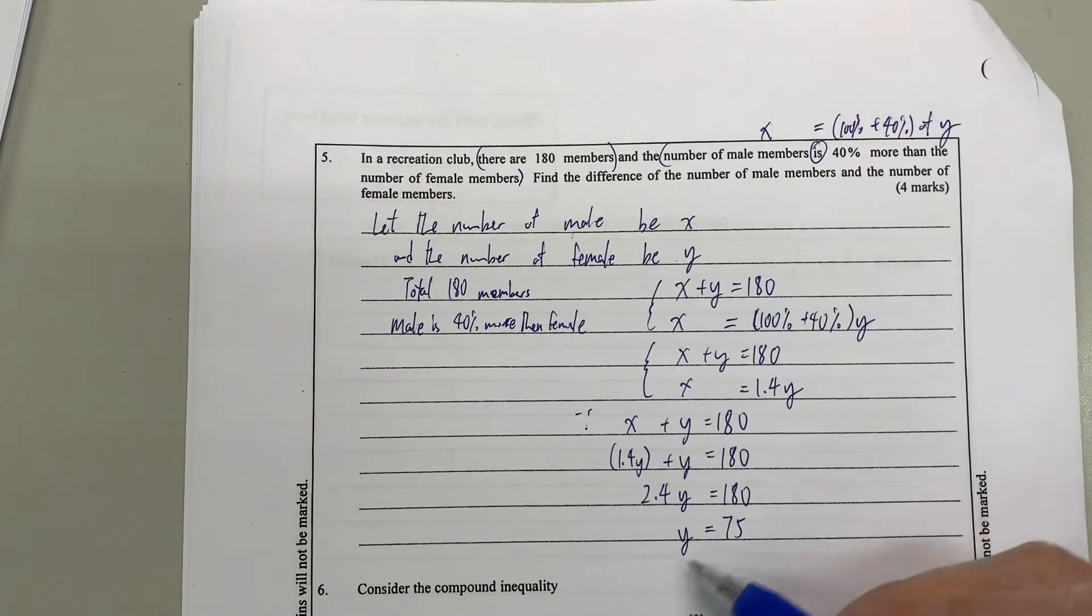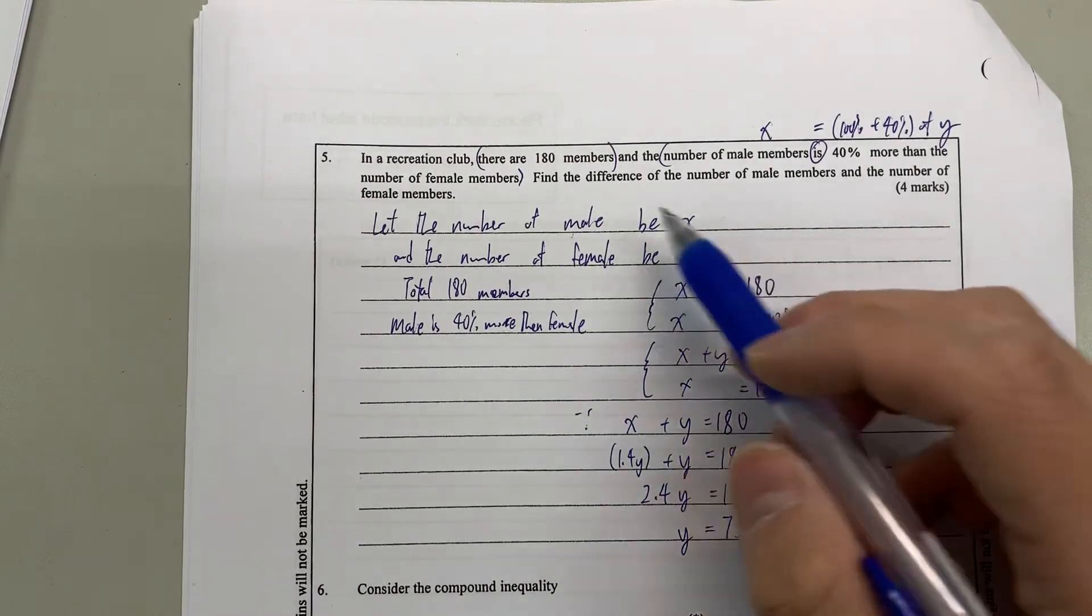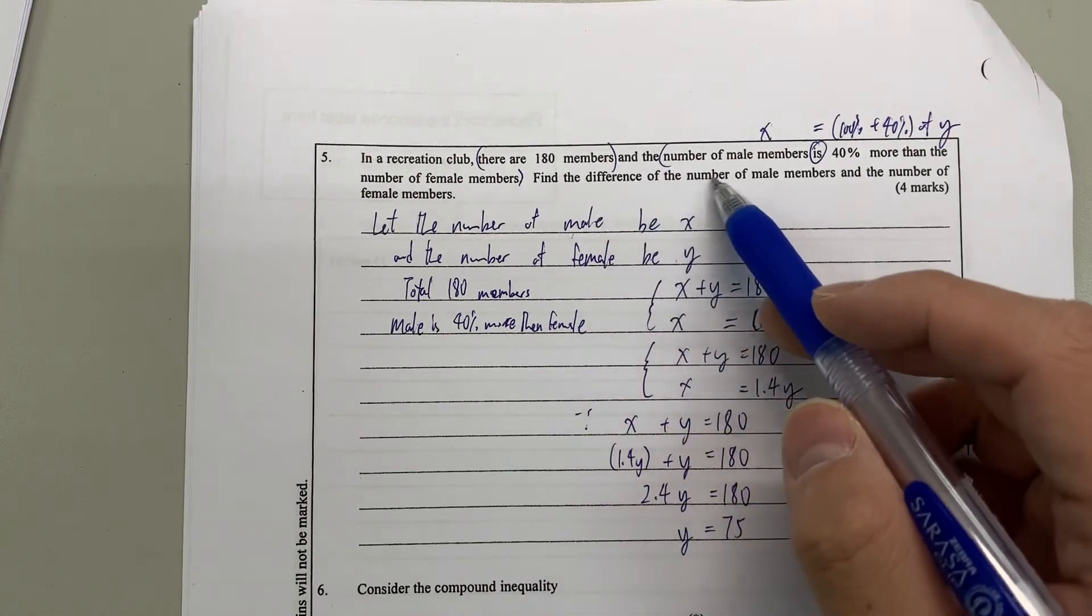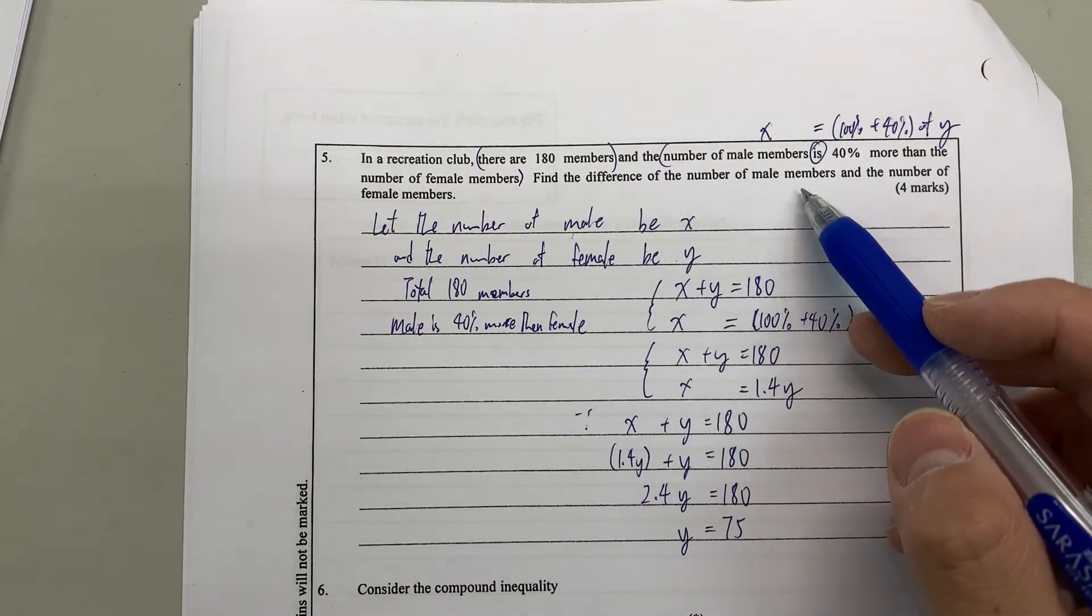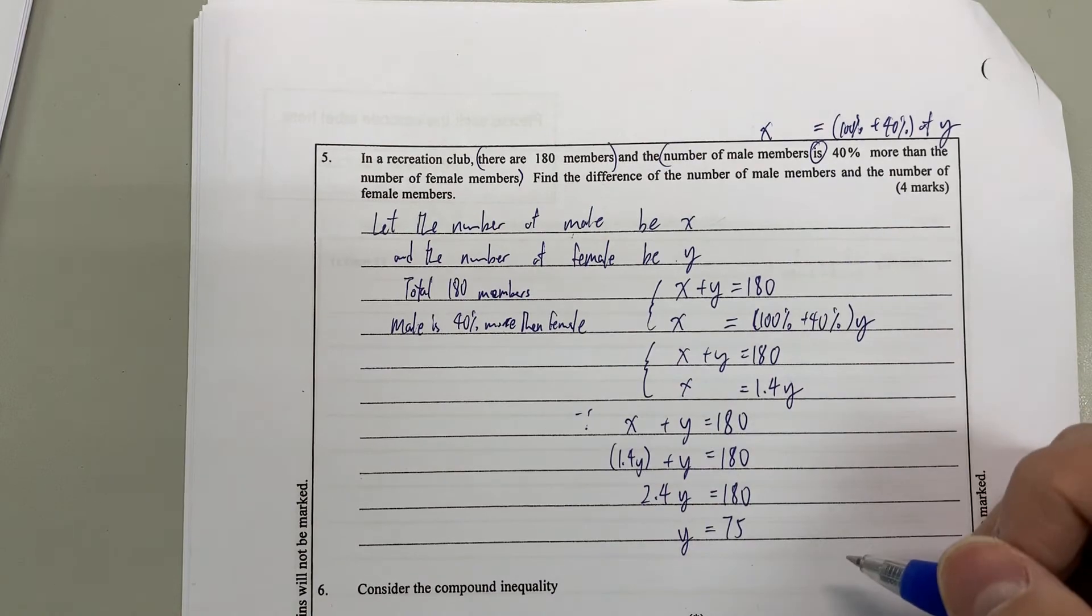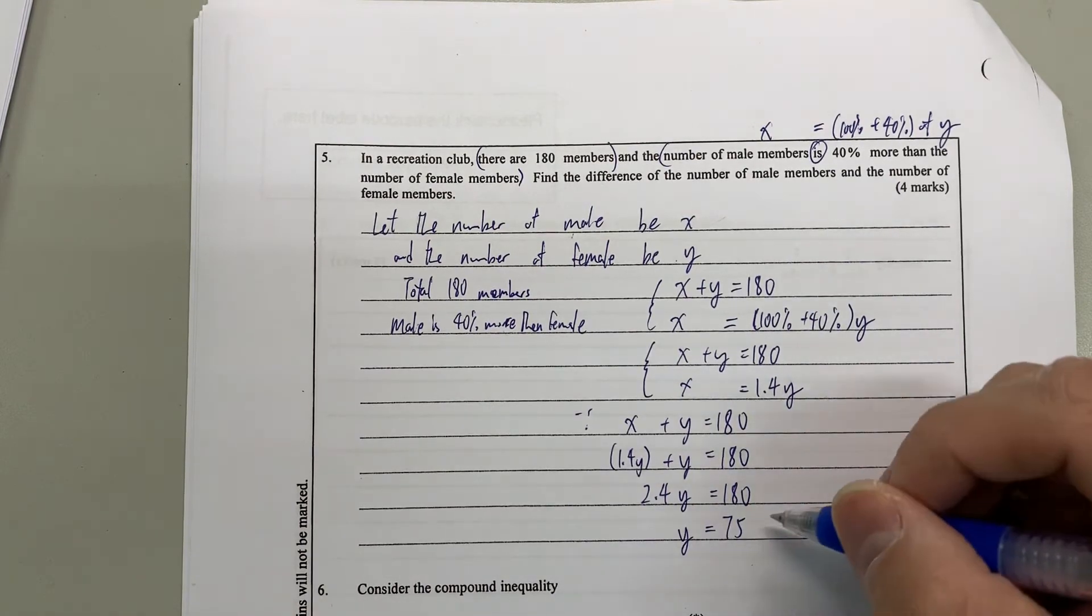That's how we get the number of female here. And don't forget, you need to answer the difference. That means you need x minus y or y minus x. We still need to get the number of male members.